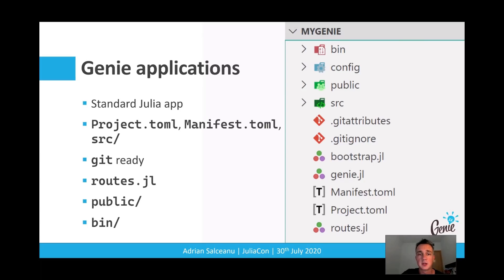The resulting application will include the familiar project and manifest TOML files, the gitignore and gitattributes files, while routes is the main entry point into the application. We can also see the public folder for static assets exposed on the web, a source folder, a configuration folder, and a bin folder with scripts for starting up the Genie application.